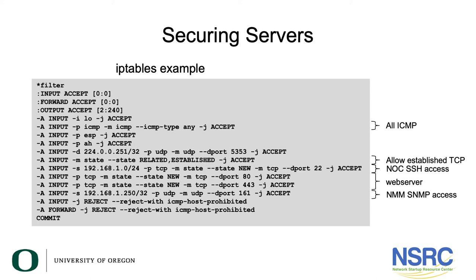The IPtables example also allows all established TCP sessions — meaning any TCP session originated by the virtual machine where we can make an outbound connection; 'established' allows the responses for these outbound connections to come back. We're also allowing NOC SSH access, generic port 80 and port 443 access, and SNMP access from the network monitoring system. All other traffic is blocked by sending an ICMP host prohibited message. This is one example from a working system setup for protecting our VM sitting on our campus server infrastructure.